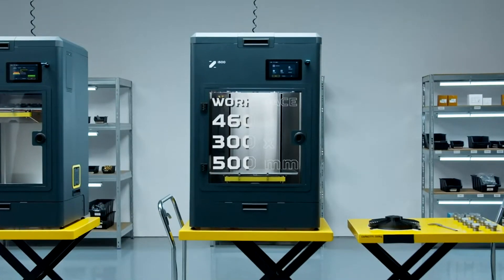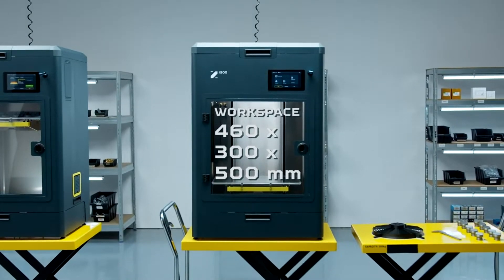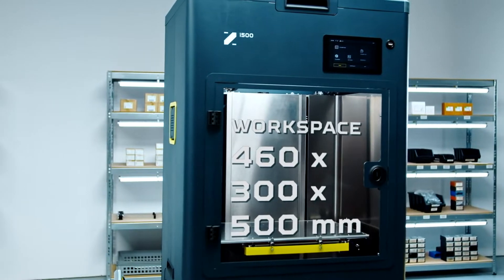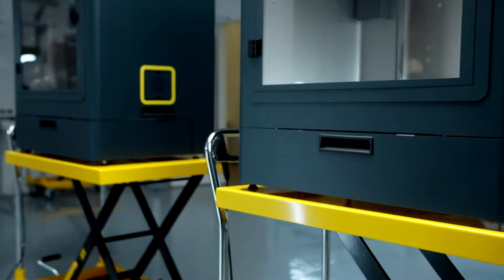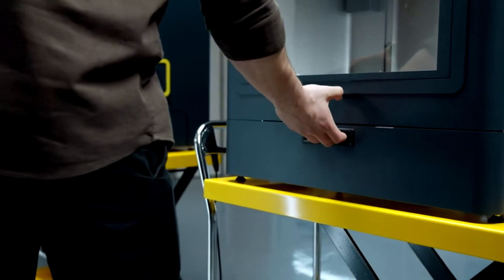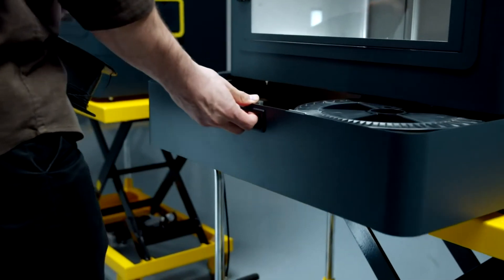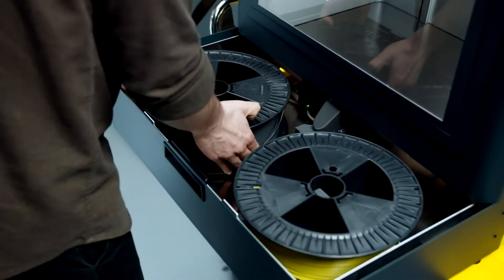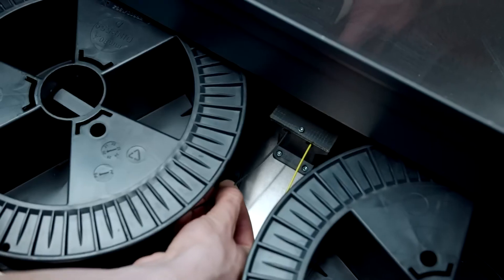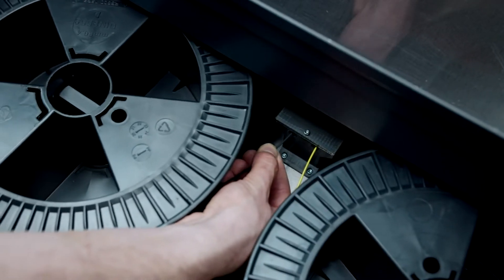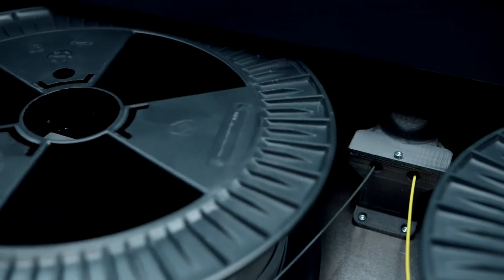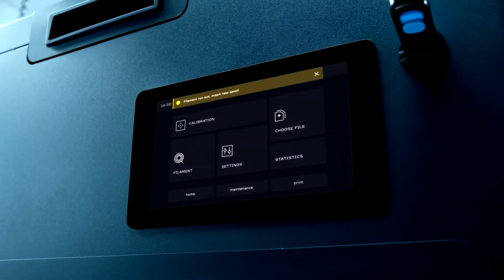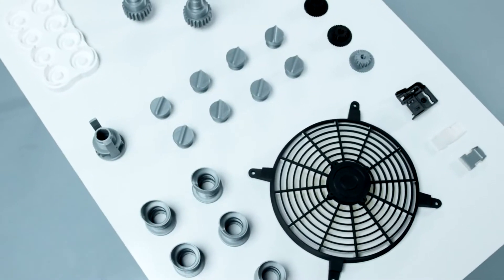The working area of i500 is 460 by 300 by 500 millimeters. The Zmorph i500 features a user-friendly material maintenance system. The bottom drawer is equipped with an automatic filament loading system and can store two spools of filament to maximize uptime. Zmorph i500 can detect if the filament flow is uninterrupted, ensuring minimum downtime.